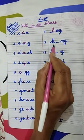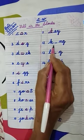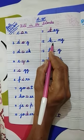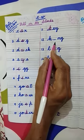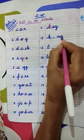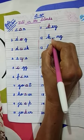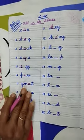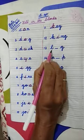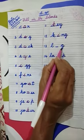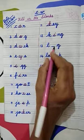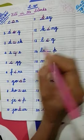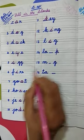Number 12: K, dash N-G. Which weight is this? Very good. King. Spelling of king: K-I-N-G. Which letter is missing here? Letter I. We have to write here letter I and complete the weight king. Number 13: L-G. This is the weight leg. Spelling of leg: L-E-G. Letter E is missing here. We have to write here letter E and complete the weight leg.